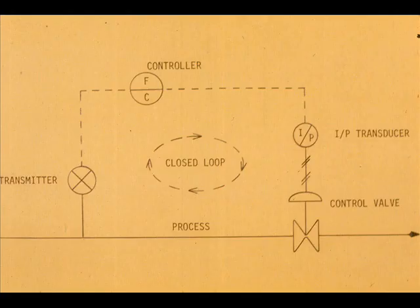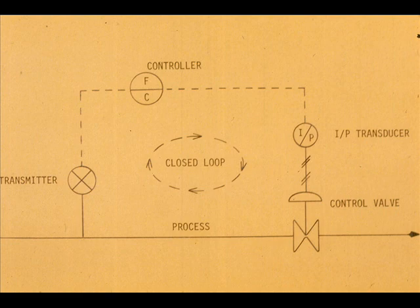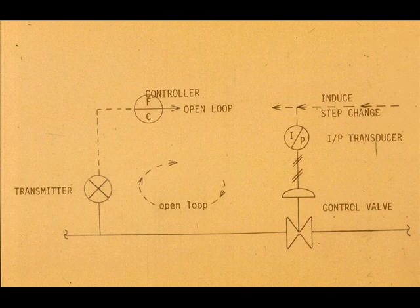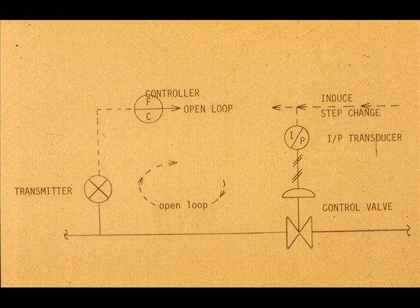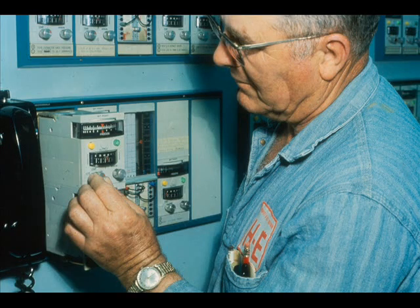The process curves we have shown are those made by closed loop control. Much information about the process is revealed by observing its reaction to a step change while in open loop status. This means the control valve stem position remains stationary while the pen moves across the chart. This can be done by placing the controller on manual.